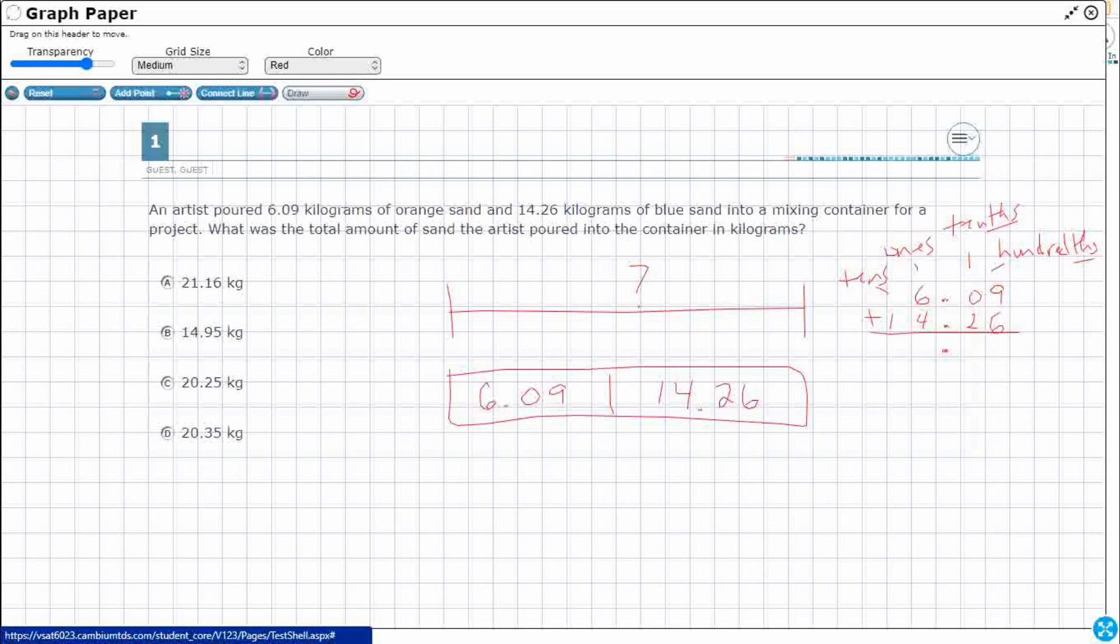Nine and six, starting at the very far right in the hundredths place, nine and six is 15. We're going to put that five right there. We're going to carry this one right there, because we can't put two digits right there in one spot.